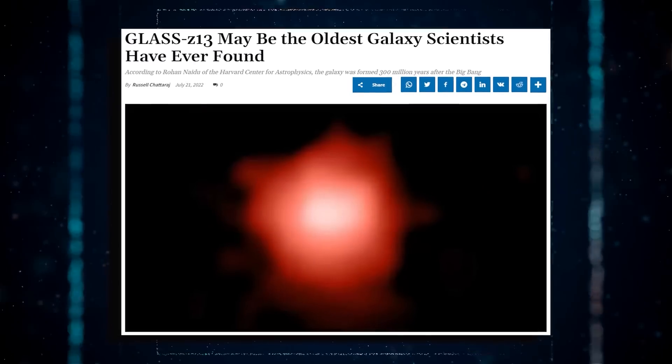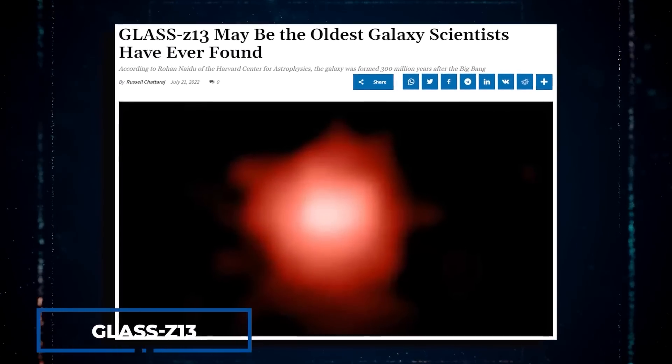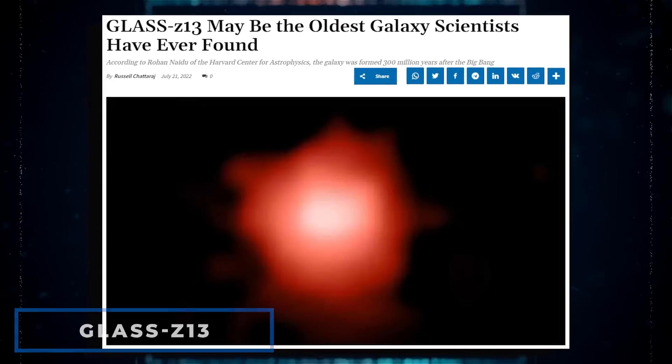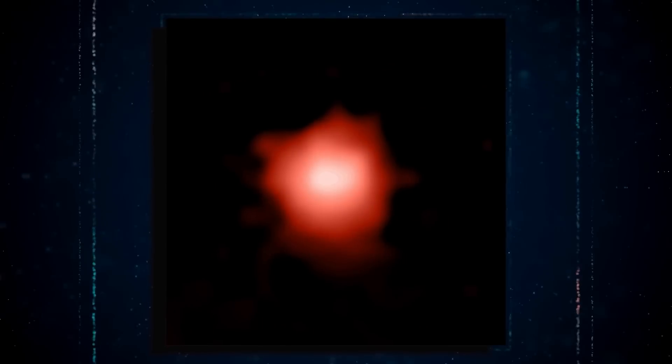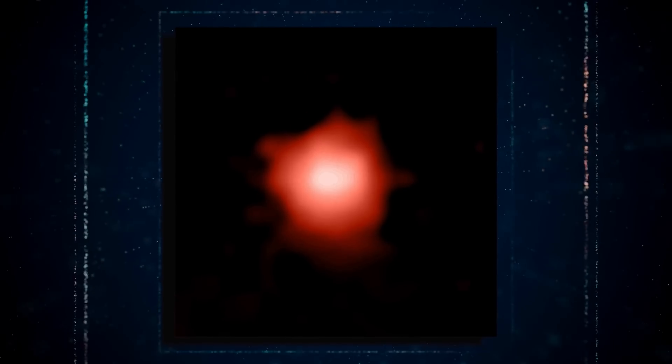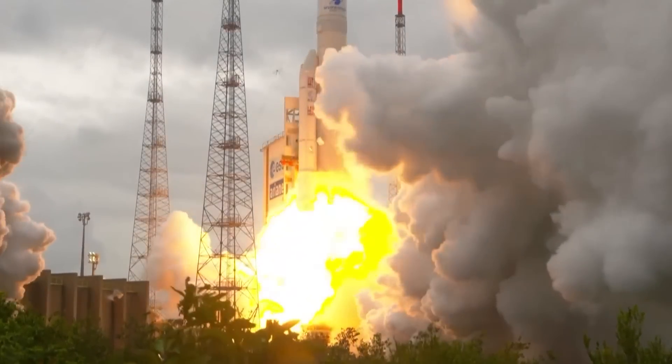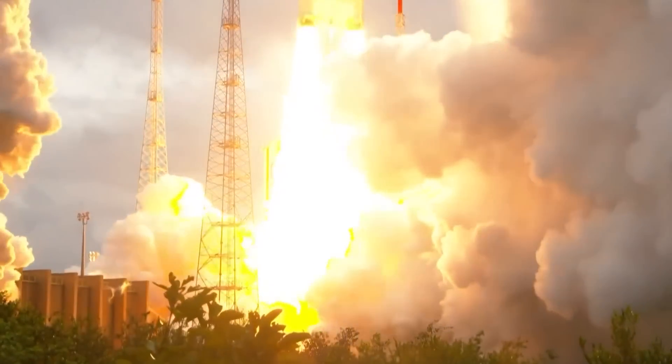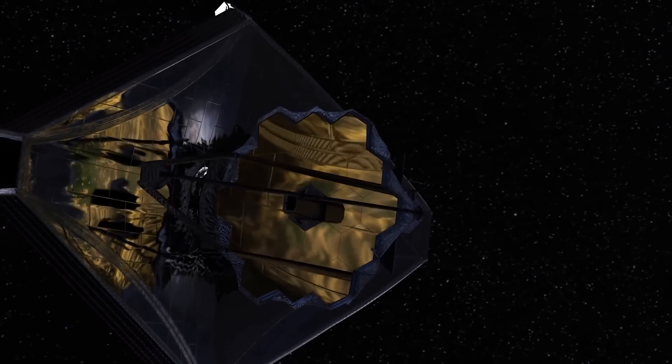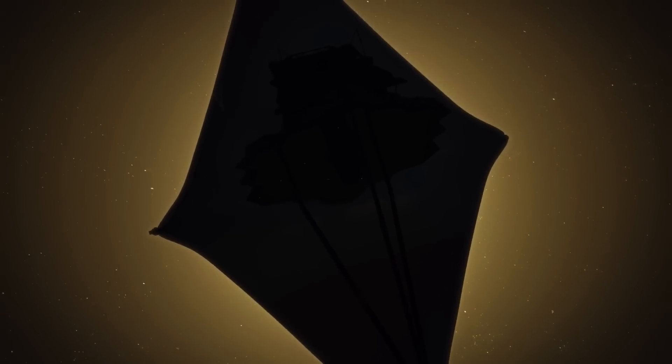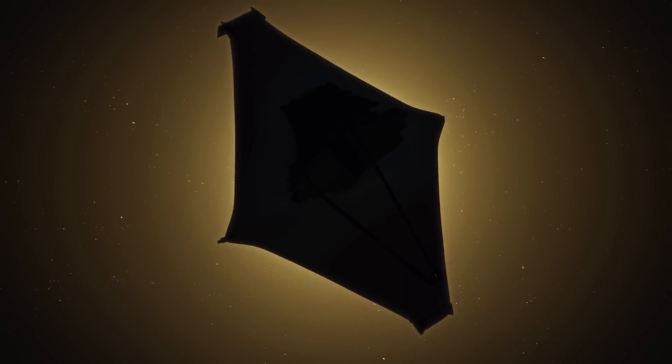A few days later, Naidoo and his colleagues published a report titled Glass Z13 on the newly discovered galaxy. It was a discovery that stunned the scientific community because no one expected the James Webb Telescope to make such a discovery. This old galaxy was discovered just a few weeks after the James Webb Telescope went into operation. It was a tremendous accomplishment, because if such a discovery could be made just a few weeks after the telescope's launch, what else could it discover?